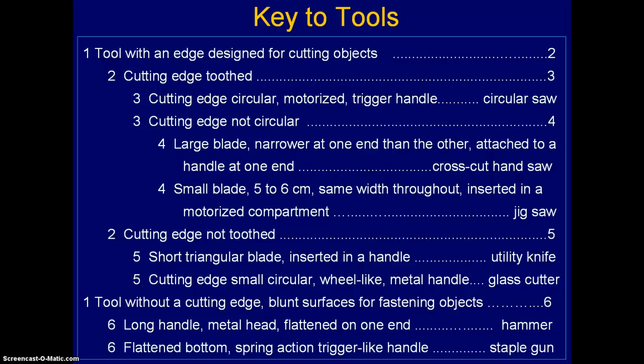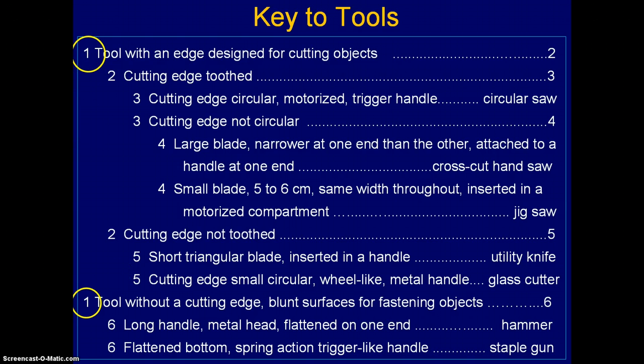Now we're going to look at a slightly more complicated key, but it actually uses the same principles as the one I just showed you. This is a key to tools. Imagine you're a person who came out of the stone age — you know how to read English, but you don't know anything about modern tools — and you find a tool and wonder what it is. The first choice would be a tool with an edge designed for cutting, and the second choice would be a tool without a cutting edge, with blunt surfaces for fastening objects. Note that the two number ones are not necessarily together, and in this case it's better to have them separated so that everything under the first number one follows logically.